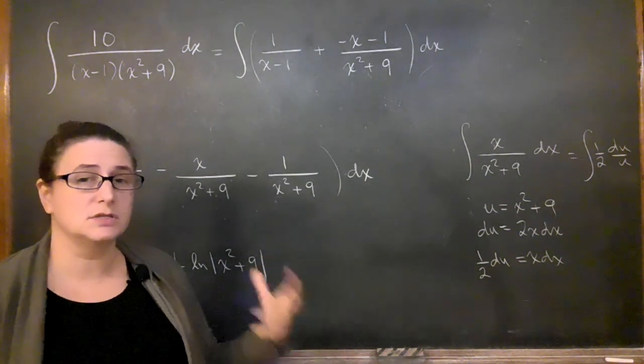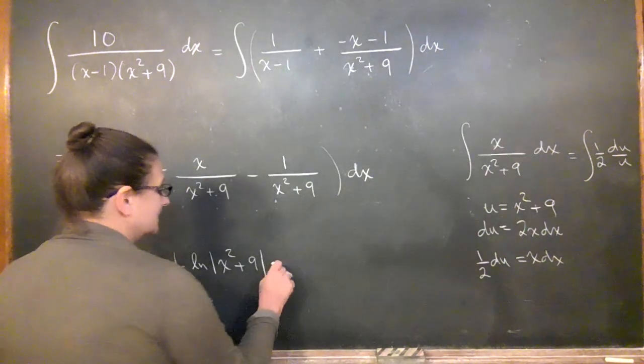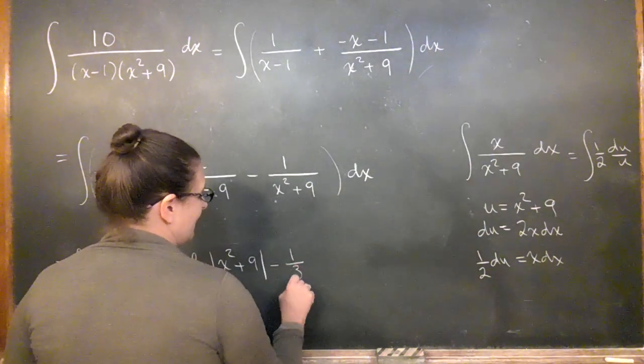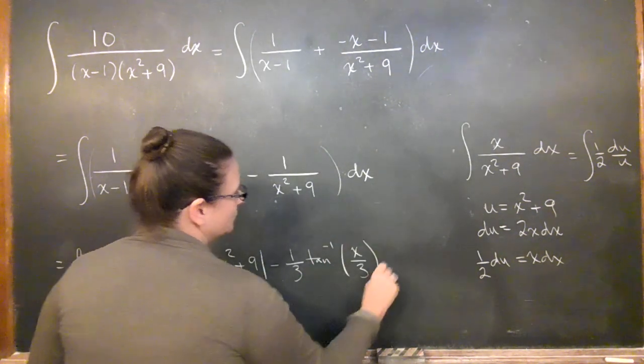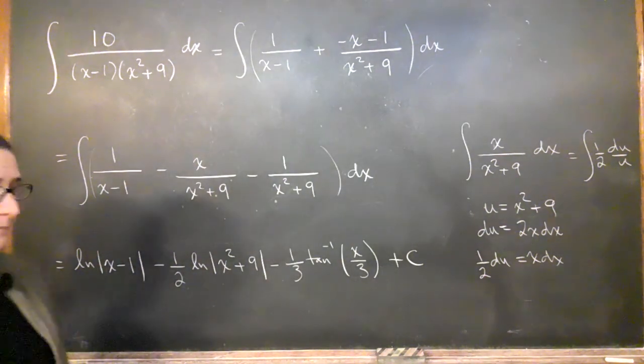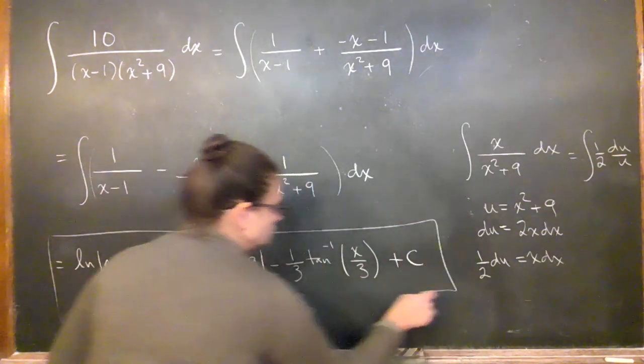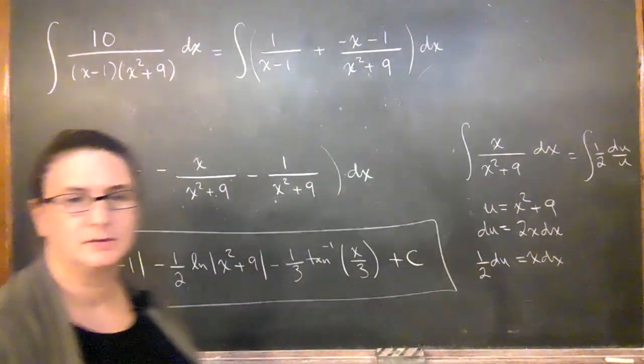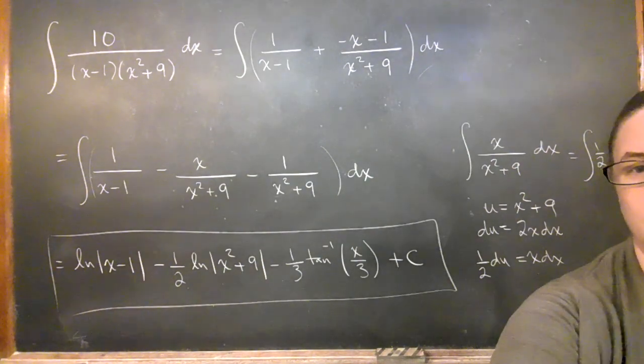So you'll see that the integral of 1 over x squared plus a squared on your basic sheet is going to be 1 over a inverse tan of x over a. And it's okay to just use that. And so that's our answer. Let's go here. I'm going to be... Let's go here.